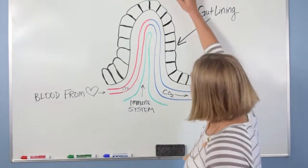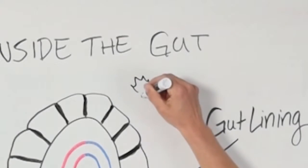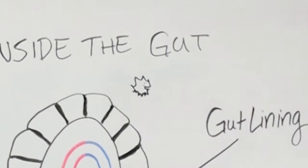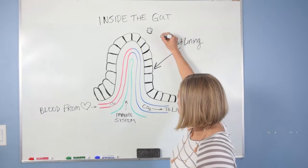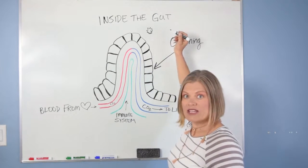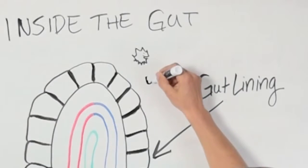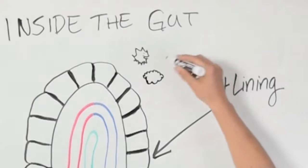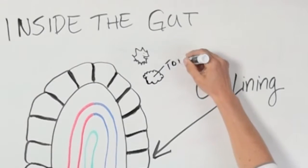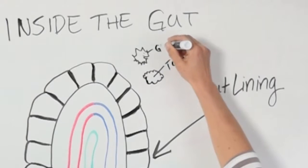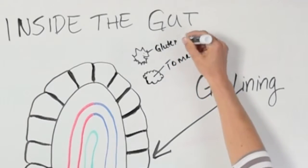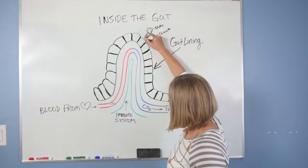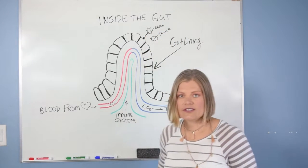So let's say that this is a nice molecule of gluten. And this fluffy one will be our tomato. So this is tomato and this is gluten — the sticky part of the wheat. These guys come down and we've eaten them, so they come down and they sit on that digestive system lining.